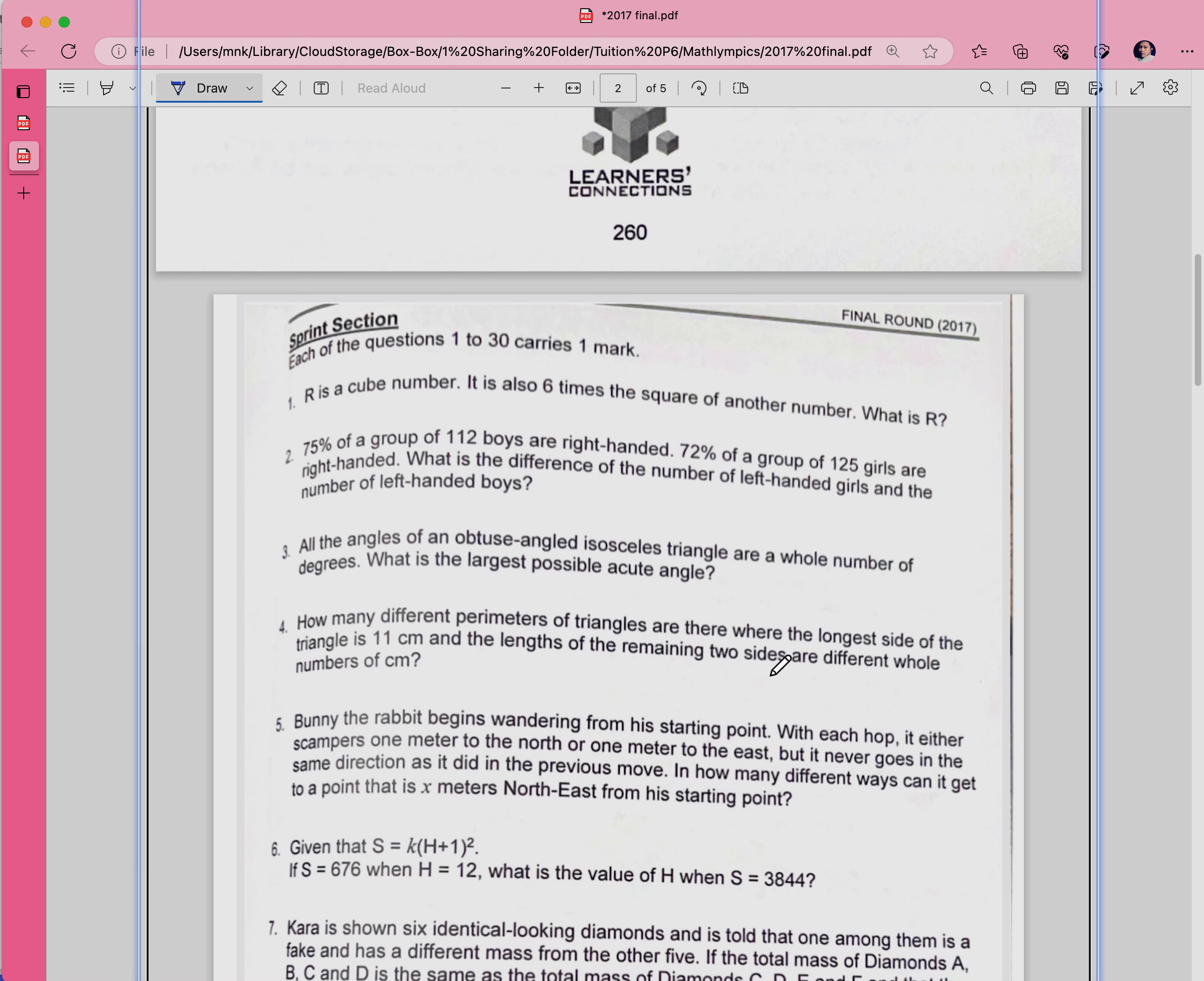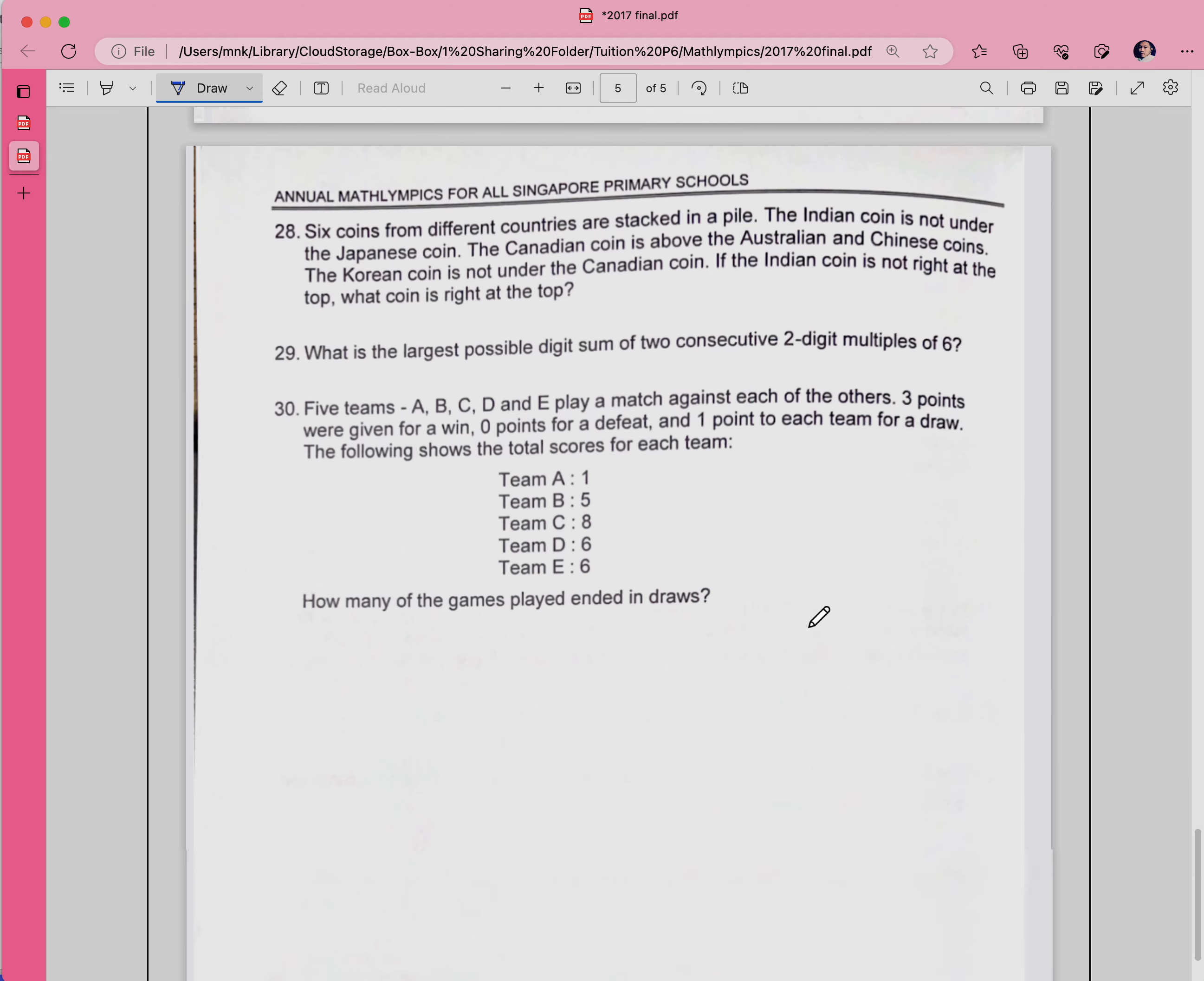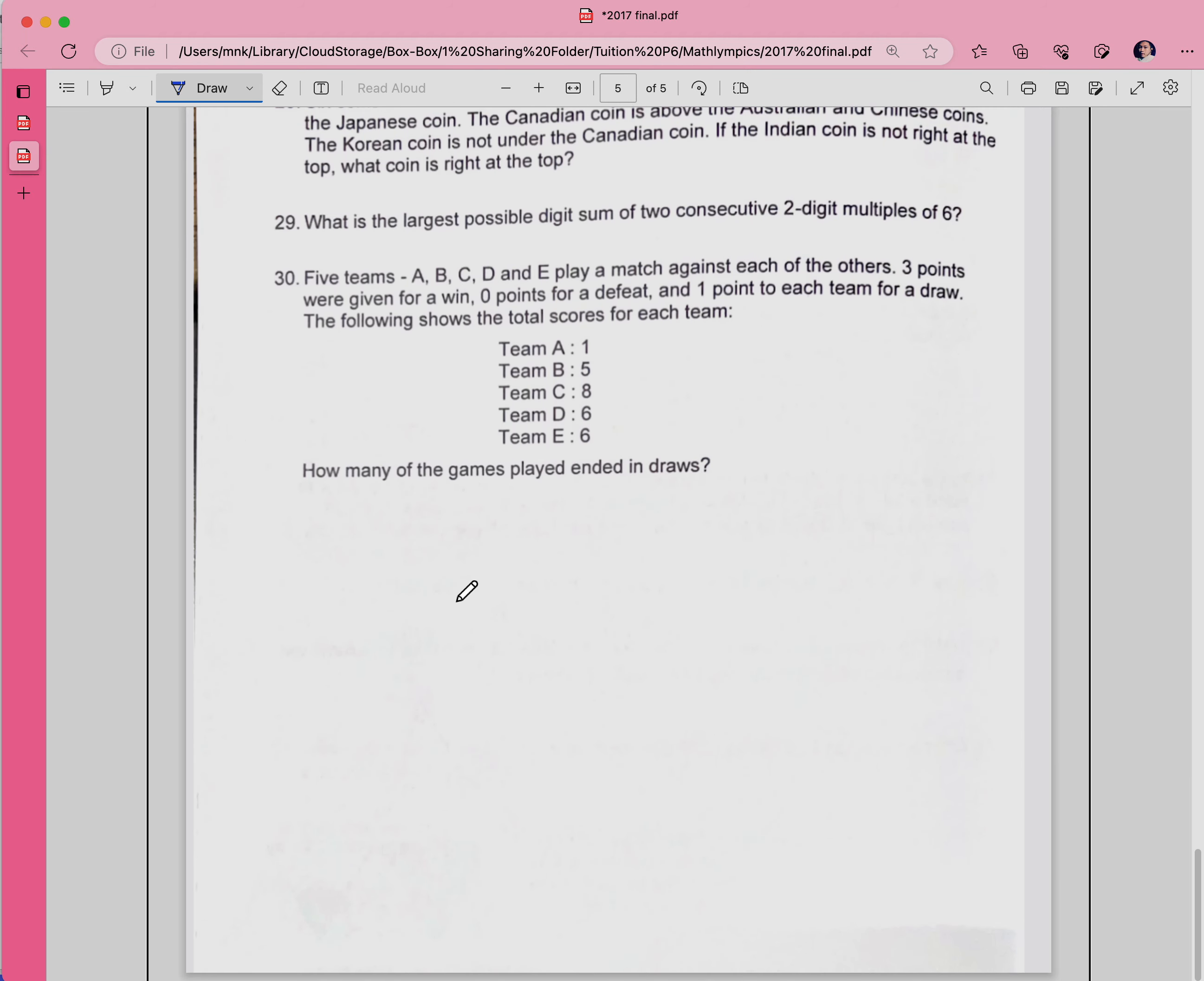The longer side is 11 and the length of the remaining two sides are different whole numbers. For a triangle, what's the meaning of longer side is 11? So the longer side is 11, which means what are the restrictions on the other two sides?